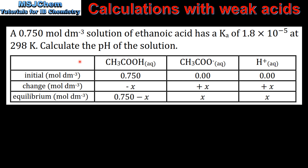First we'll make an ICE table. ICE stands for initial concentration, change in concentration, and equilibrium concentration. The initial concentration of ethanoic acid is 0.750 mol per decimetre cubed.